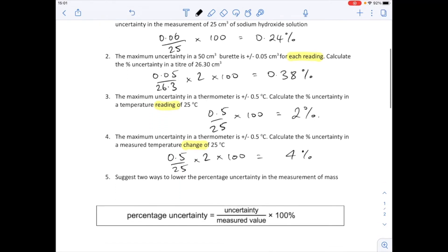And then the final question suggests two ways to lower the percentage uncertainty in the measurement of mass. So if you were measuring mass, well, there's two things you could do. You could lower the uncertainty value. So you would do that by using a more accurate balance, like a three decimal place balance instead of a two decimal place balance.